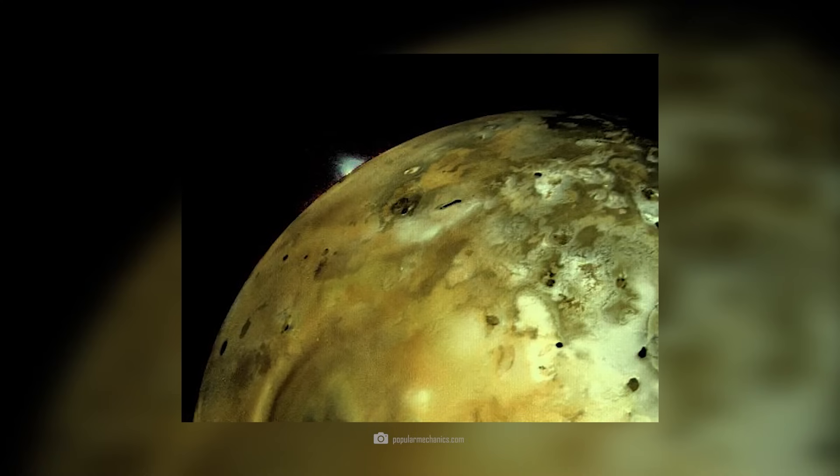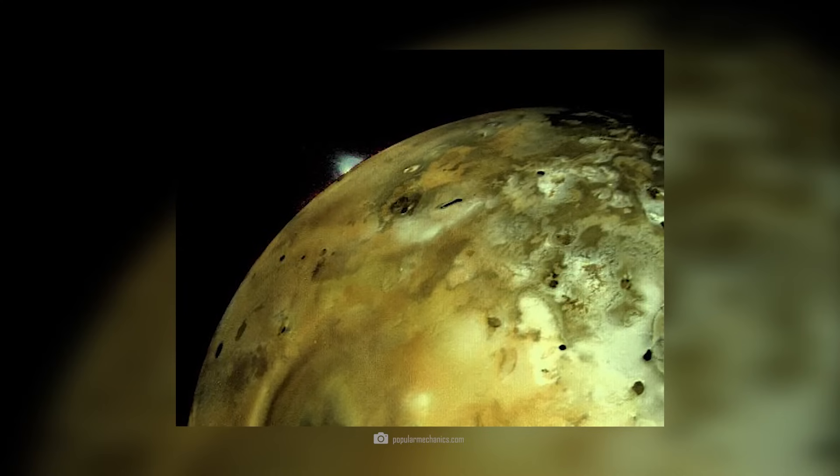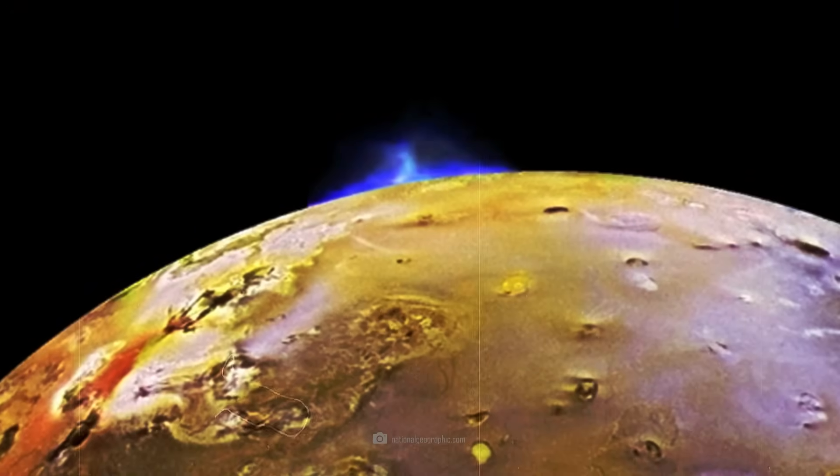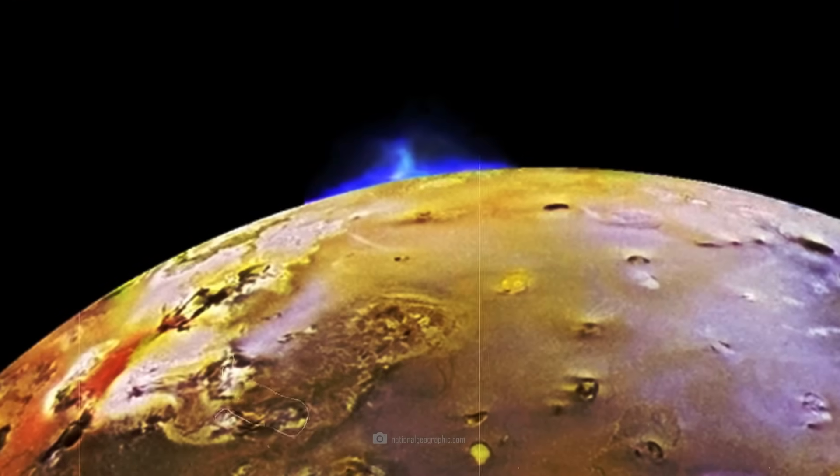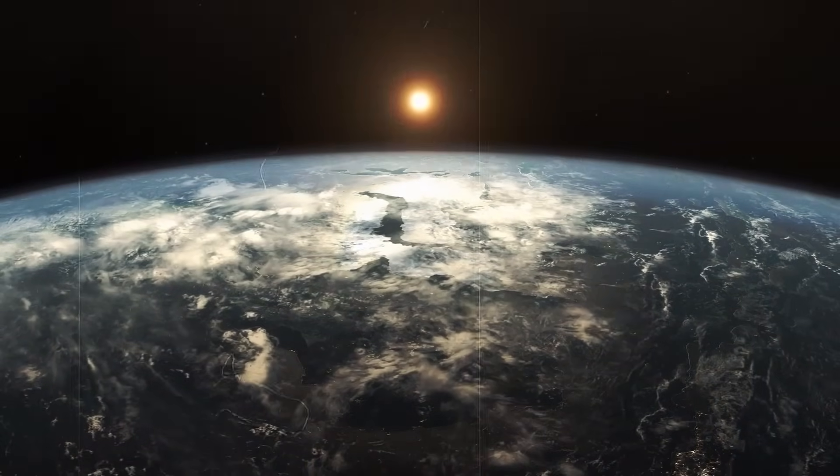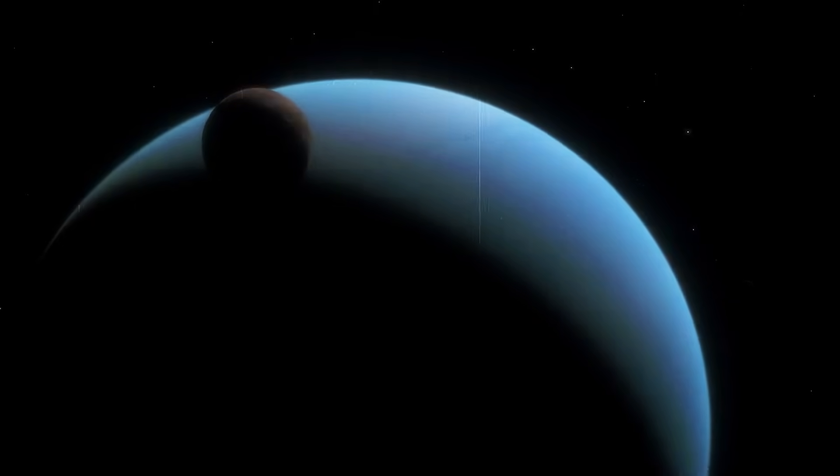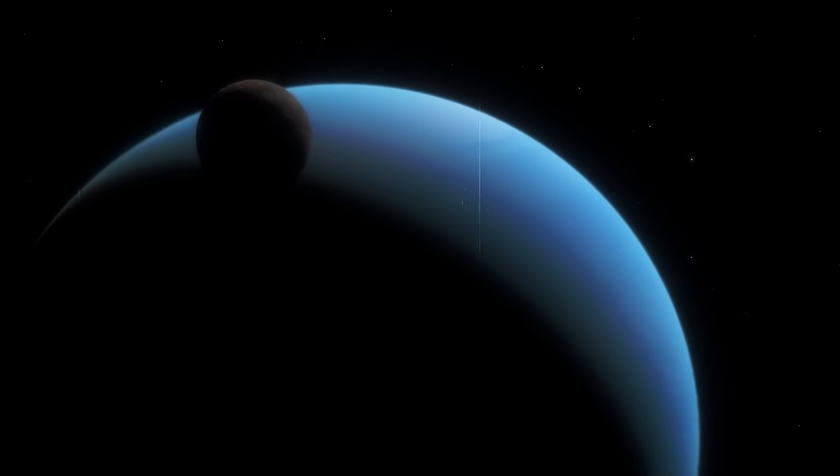What was completely new in the 1970s, however, was the discovery of volcanic activity on the moon. Nobody had expected to see sulfurous volcanic eruptions shooting kilometers into space on a moon. It was the first direct observation of geological processes on another body in the solar system and thus a milestone in planetary research.